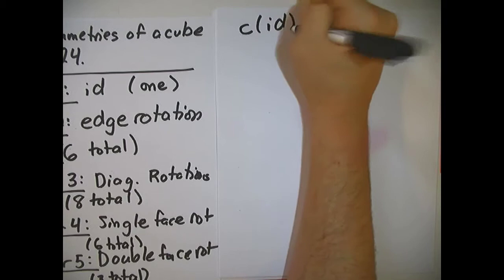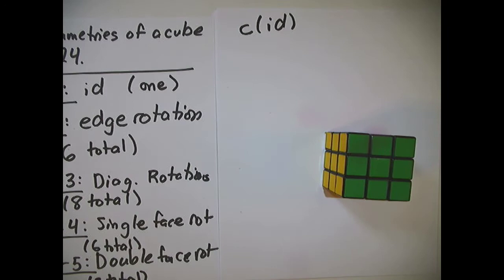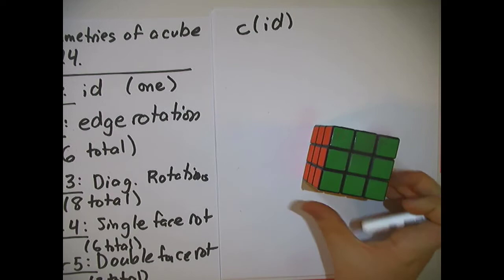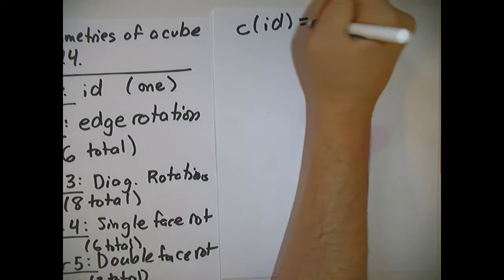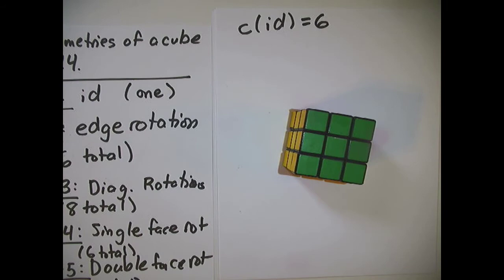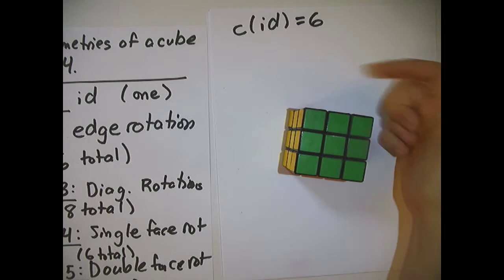We need to calculate the cycle number for each of these symmetry types. The cycle number of the identity: if I don't do anything to the cube, each face lives in its own orbit, so the cycle number of the identity is six. The nodes we're coloring are the six faces of the cube, and the identity, as always, puts each node in its own orbit — so the number of cycles equals the number of nodes.